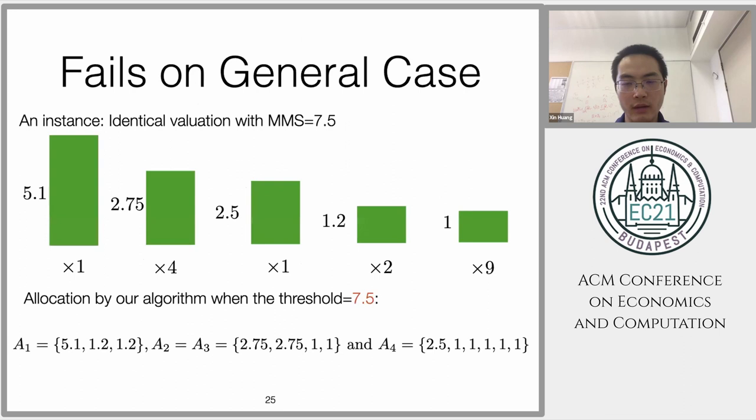But this kind of approach will fail on the general case. Here's an example: you have a chore with 5.1, nine chores with one, and two chores with 1.2 valuation. All agents have identical valuation. The maximum share is 7.5. The maximum share allocation is listed on the bottom. If you input the threshold with 7.5 by our algorithm, but if you increase this to 7.6, then you will find this doesn't work—you have some chores unallocated.